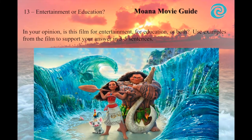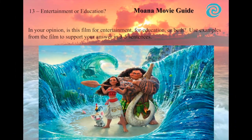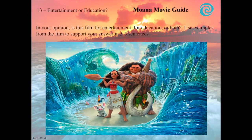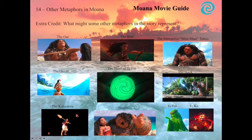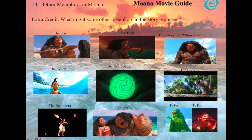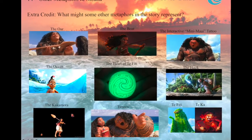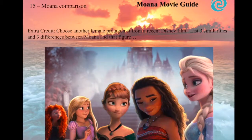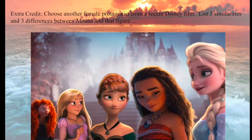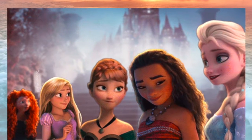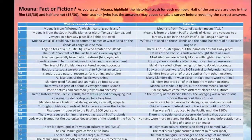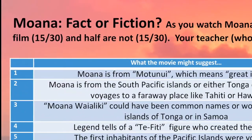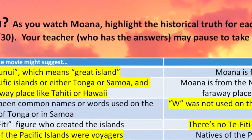Thirteen: an entertainment versus education lesson, determining if the movie is more entertainment or more education, supporting your answer with evidence from the film. Fourteen: a hidden metaphors lesson, where you take a stab at the meaning of other metaphors in the film, such as the Kakamora, the boat, or Maui's tattoos. Fifteen: a lesson relating Moana to other recent Disney female protagonists. Or sixteen: a fact versus fiction lesson, where you take a look at thirty claims from the film and determine which fifteen are real history and which fifteen are not.